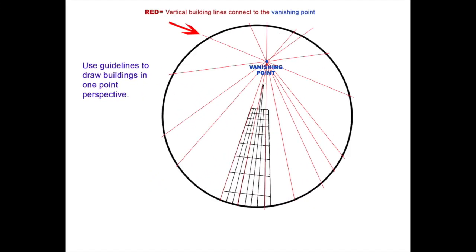Every vertical line in your building should connect to the vanishing point. You might not always draw the line all the way up to the vanishing point, but if you line up a ruler it should connect.